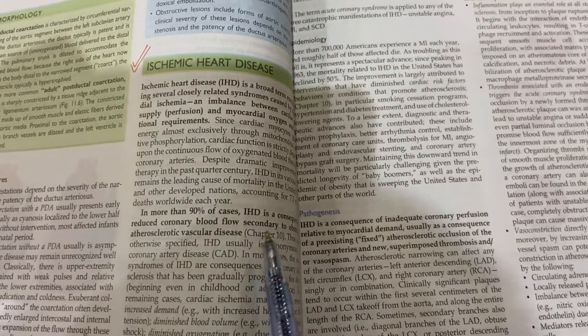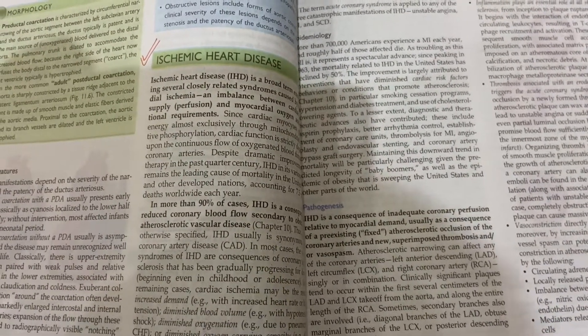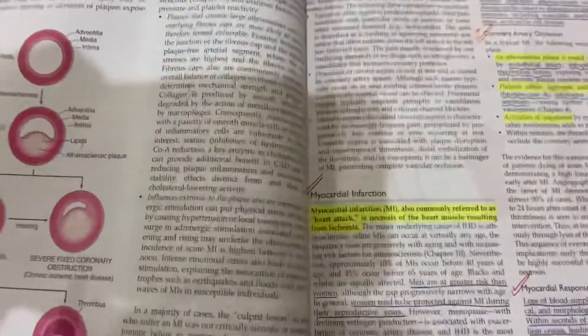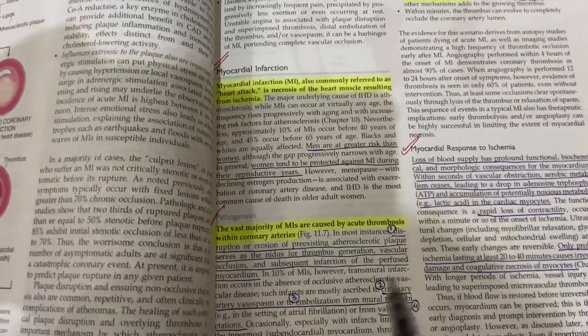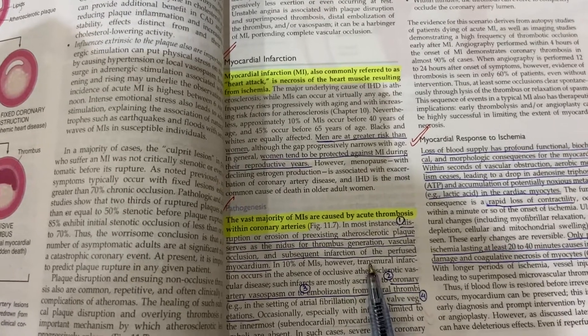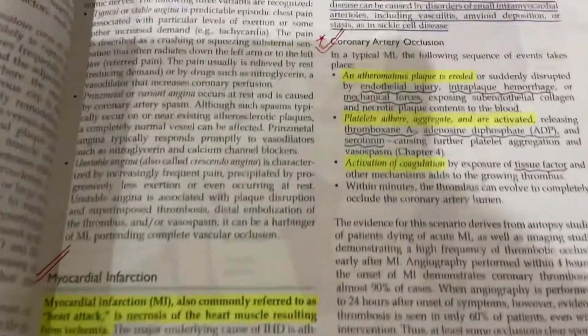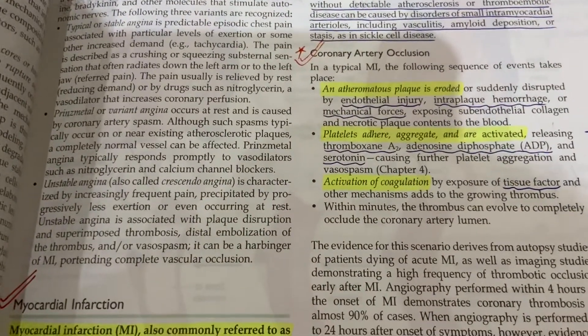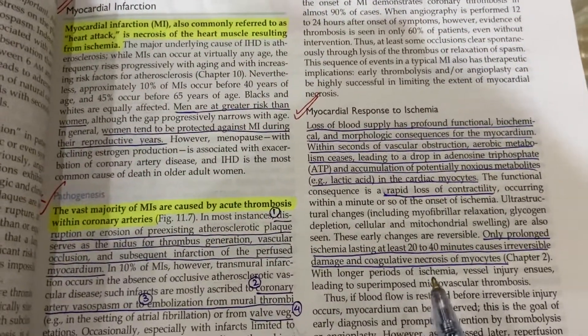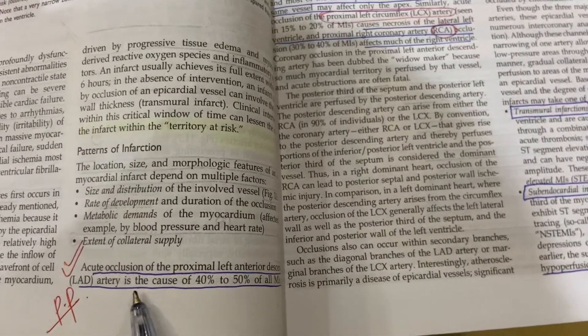Ischemic heart disease is basically important for the exam. Just give a read to its introduction. Then we have myocardial infarction — this topic is important for ACQs and MCQs. You should know about its pathogenesis, its definition, and then the sequence of events which take place in coronary artery occlusion. Just give a read to the myocardial response to ischemia.